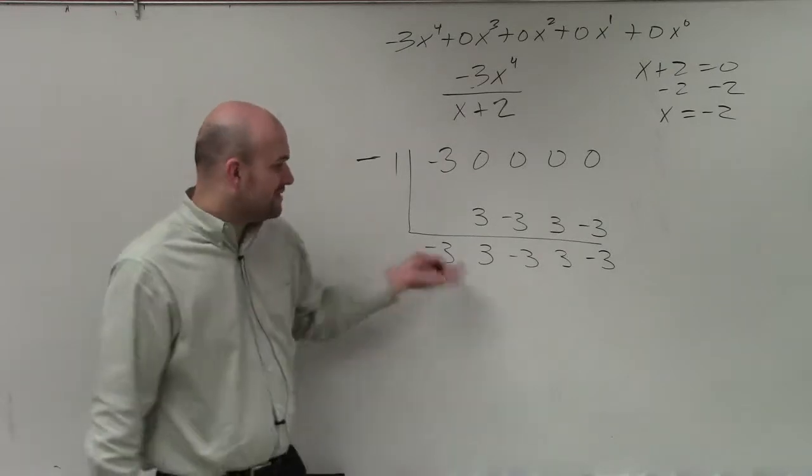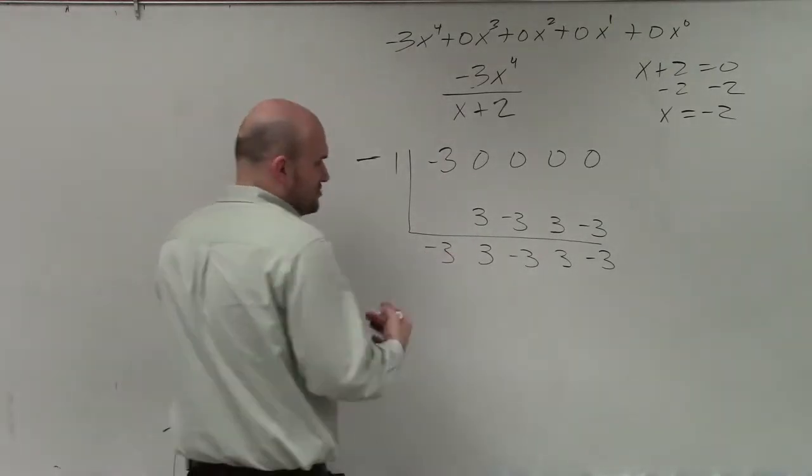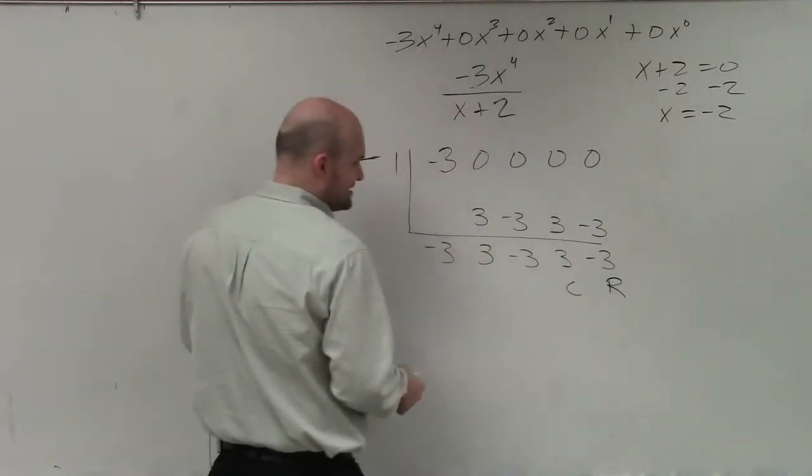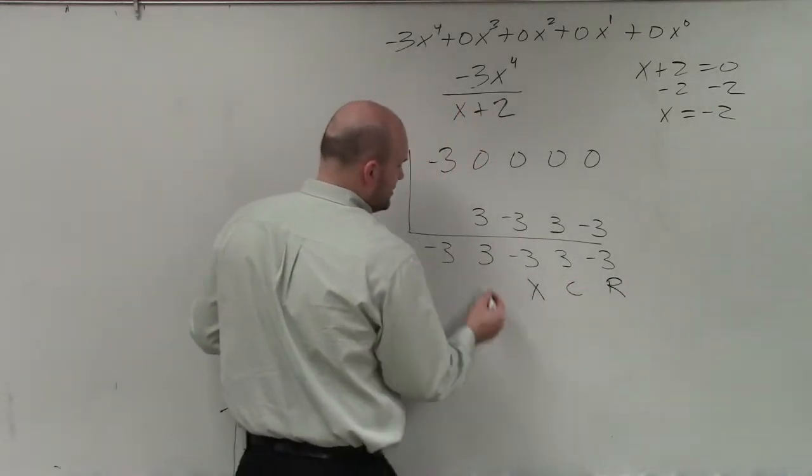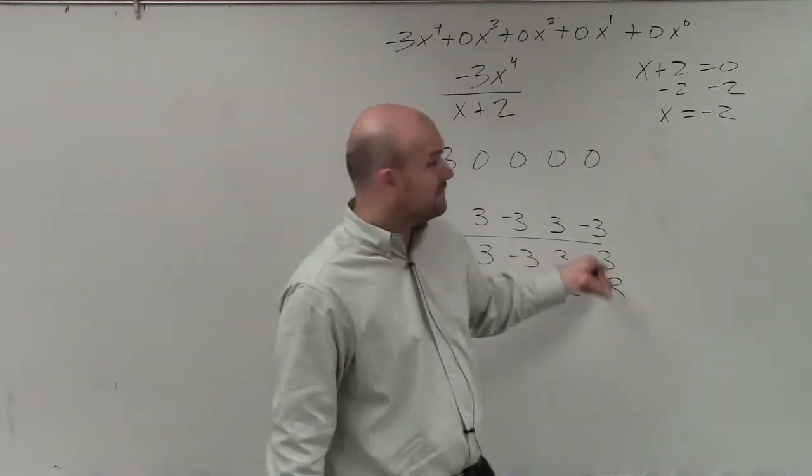We have -3. The next thing is we have -3, 3, -3, 3, -3. Now remember when we're counting our quotient, we always start with our remainder. Then we go to our constant, then we go to our linear, our quadratic, and then our cubic term. So we have a remainder here which is -3, and then we have a cubic as our quotient.